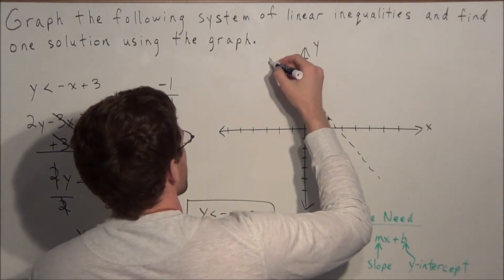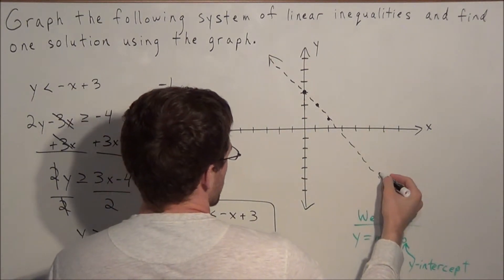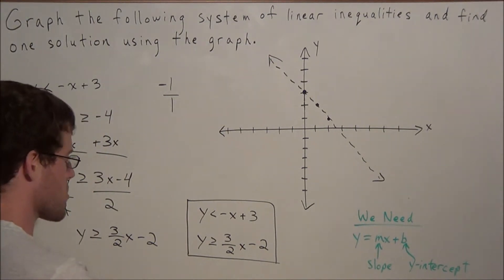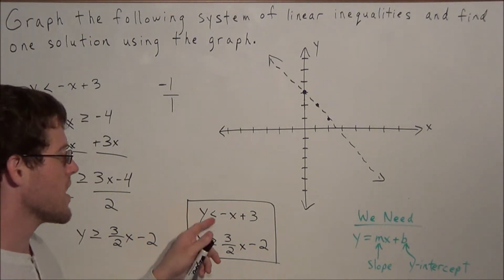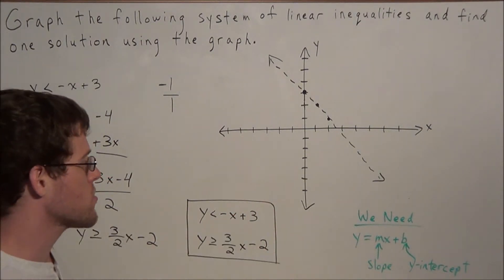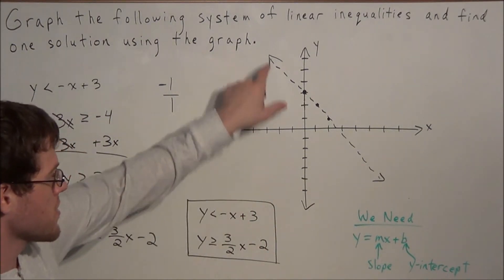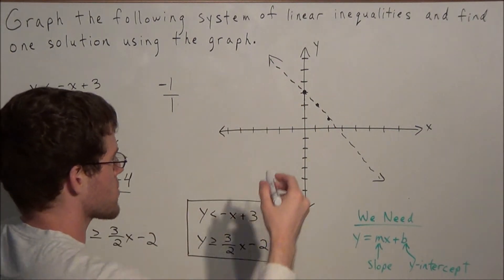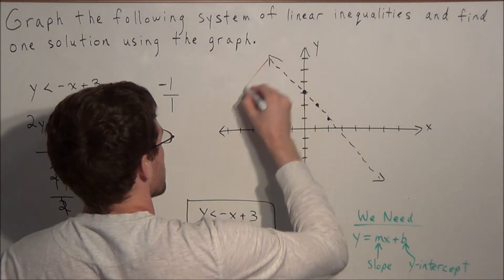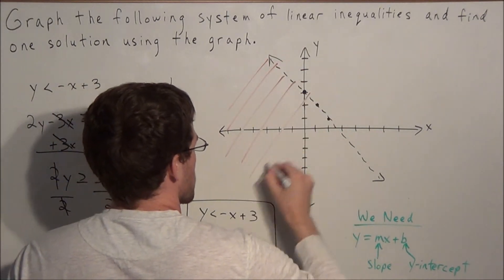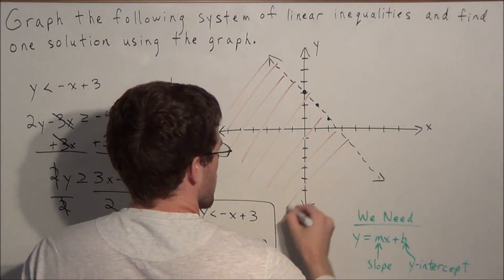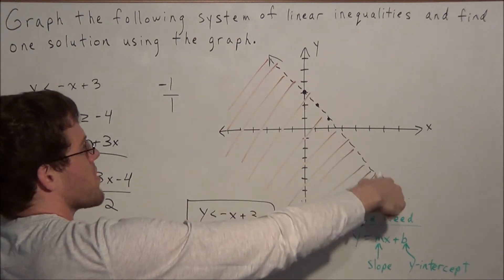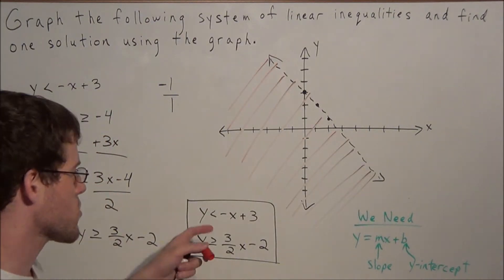We put arrows on the ends of the line to indicate it goes on forever in either direction. Now we shade in the solution to this inequality. Since y is less than negative x plus 3, we shade everything underneath or below this line. We do not include the points on the line in our solution because it's strictly less than.